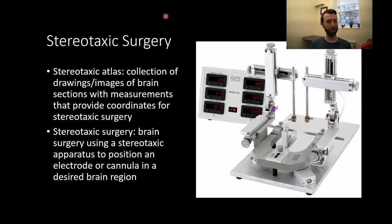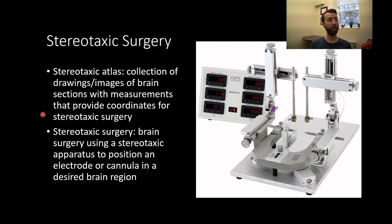Brain surgery in the lab is not as complex as you might think. We use a stereotaxic atlas — a collection of drawings and images of brain sections with measurements that provide coordinates for stereotaxic surgery. These are precise maps of the brain showing exactly where target regions are. If you're studying a brain region that has been studied before, you can consult the literature for coordinates others have used, pilot those in your own lab, and proceed from there.